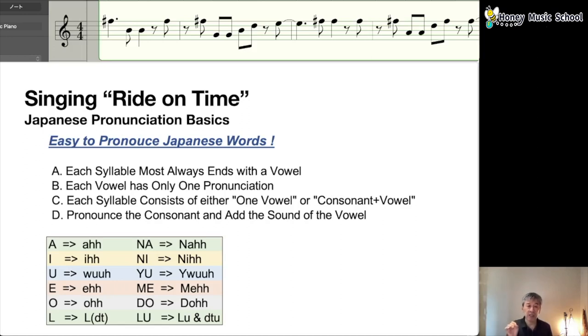So if you put a consonant N in front of A, A is A, N is N, same N sound, so N-A. I is, so N-I - I is E with the N sound, N. N-I. U-U, the U sound is U. Y-U is U. M-E sound, the E sound is E. Put M in front of it, M-E. Same thing, D-O.